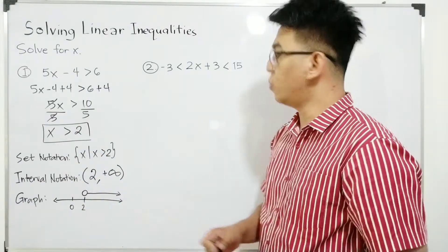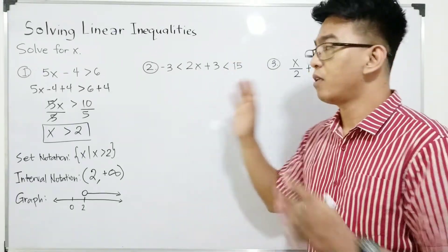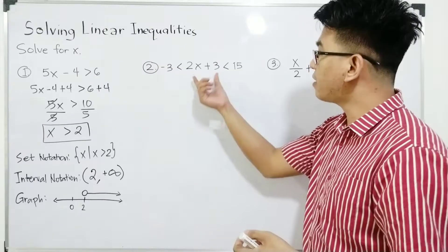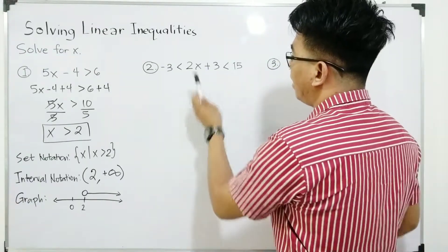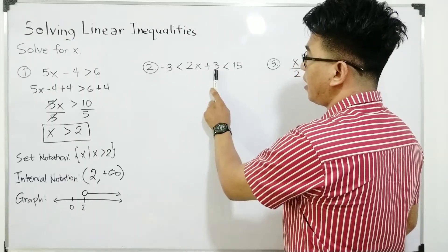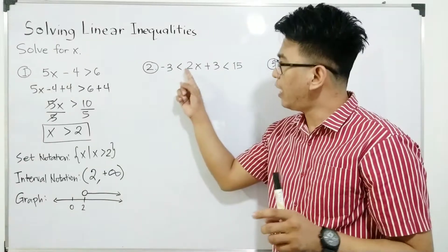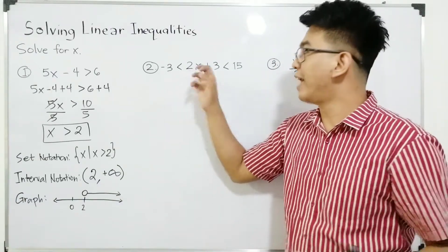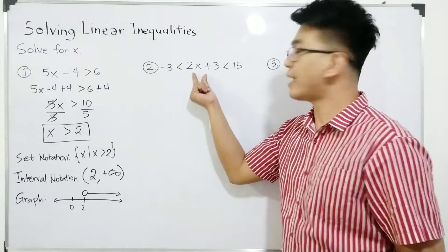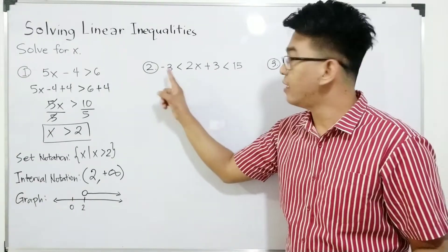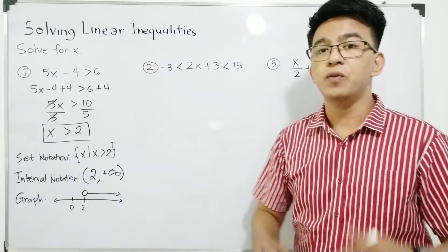For number 2, some of you may not know how to read this. We have two inequality symbols. We will start at the middle. It is read as: 2x plus 3 greater than negative 3 — reverse the direction — so greater than negative 3, but less than 15. Again: 2x plus 3 is greater than negative 3 and less than 15. So how are we going to solve for the value of x?